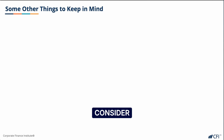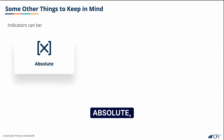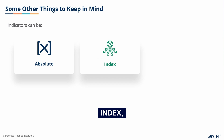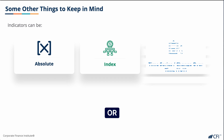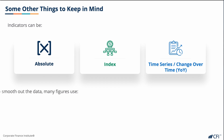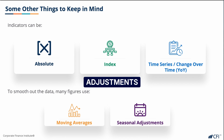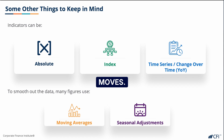Other things to consider when looking at economic indicators would be whether the figure is absolute, whether it's an index, or whether it's a time series, which means that it changes over time — say year over year. Lastly, many figures use moving averages and seasonal adjustments to smooth out the data and to take out erratic moves.